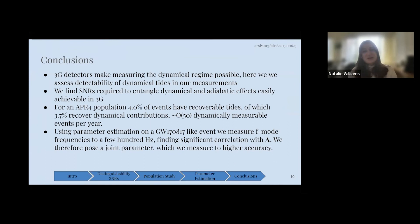Moving on to our conclusion, we know that 3G detectors make the regime for measuring dynamical tides possible. We find the SNRs required to entangle dynamical and adiabatic effects are easily achievable. However, in a population, only 4% have recoverable tides, 3.7% of which recover dynamical contributions. However, given the amounts that we expect, we find about the order of 50 are dynamically measurable per year. We use parameter estimation on a GW170817-like event to measure the F-mode frequencies to about a few hundred hertz, finding a significant correlation with lambda and pose a joint parameter instead, which we measure to higher accuracy. That's everything I've got. Thank you.